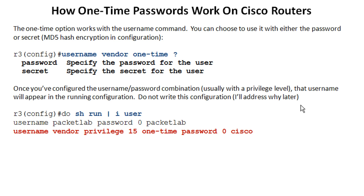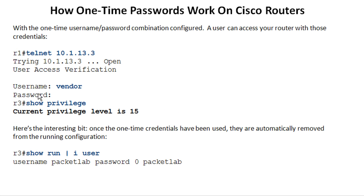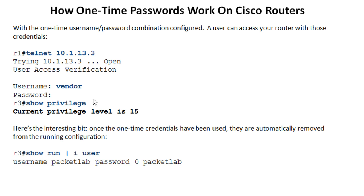Note: do not write this configuration — I'll address that shortly. In this example, R3 is configured with the one-time password. From R1 we can test this out by telnetting to R3, using 'vendor' and 'Cisco' as credentials, and we are in. We can verify we're at privilege level 15 by doing a 'show privilege'. Now here's where it gets interesting: once the one-time credentials have been used, they are automatically removed from the running configuration. This same user accessed R3 from R1, logged in with vendor/Cisco at privilege 15, then issued a 'show run | include user' and the only username remaining was the preexisting 'packet lab'. IOS has automatically removed the one-time credentials from the running configuration as soon as they were used.